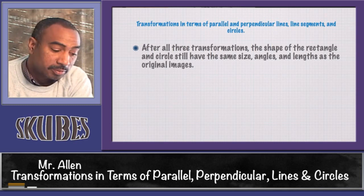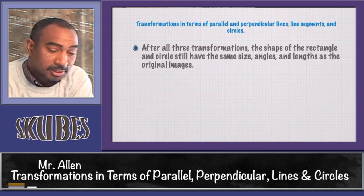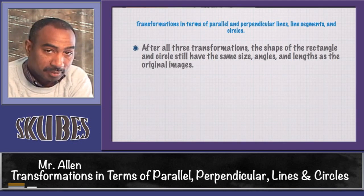After all three transformations, the shape of the rectangle and circle still have the same size, angles, and lengths as the original images.